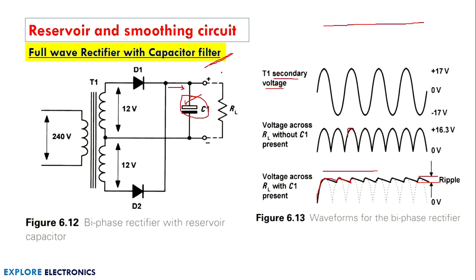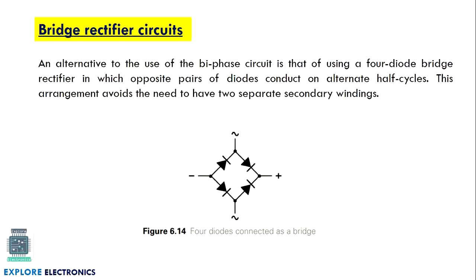Next we have the bridge rectifier circuit. The bridge rectifier is also a full wave rectifier — it works the same way but uses a bridge arrangement of diodes to get pulsating DC output. It consists of four diodes connected in a bridge fashion. Opposite pairs of diodes conduct on alternating half cycles: one pair conducts on the positive half cycle and the other pair conducts on the negative half cycle.